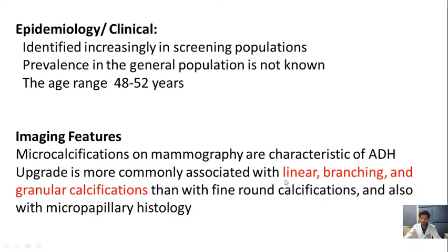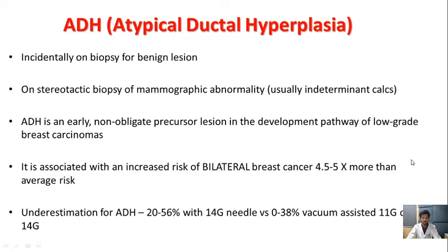Calcification that may be linear, branching, or granular is associated with more upgrading than fine round calcification and micropapillary histology. Atypical ductal hyperplasia is detected incidentally on biopsy for benign lesions and is an early non-obligate precursor lesion in the development pathway of low-grade breast carcinoma. It is associated with an increased risk of bilateral breast cancer of 4.5 to 5 times more than the average risk. Underestimation is more likely when core biopsy is performed with 14-gauge needles (25%) compared to 0 to 38% when performed with vacuum-assisted or 11-gauge needles.